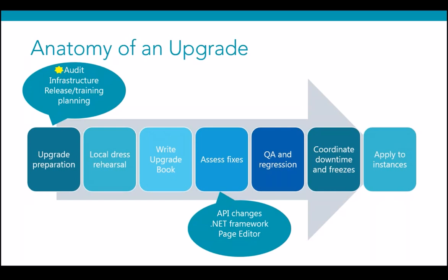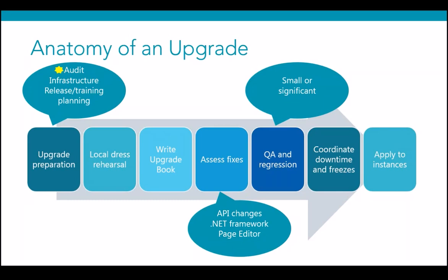A few other examples: the .NET framework increases to 4.5 with version 8. API changes are part of the game. QA and regression can be small or significant — really depending on how large a custom application is sitting inside your Sitecore solution, including custom elements, an integration layer, and whether it's talking to other systems. Then coordinate downtime and proceed to apply the upgrade through your dev, staging, and production environments.